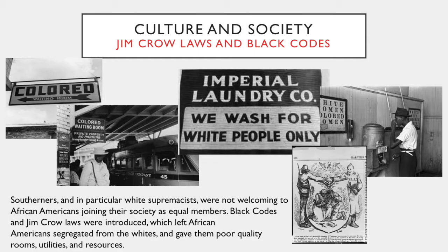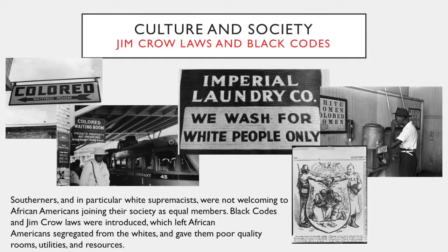Regarding migration and settlement: more land was available to purchase in the South, so many Northerners migrated there. One main reason for the big migration was the cotton industry in the South, and many Northerners had hopes of making profit from cotton plantations. Through this migration, the South's population, economy, cotton production, and social climate positively changed.